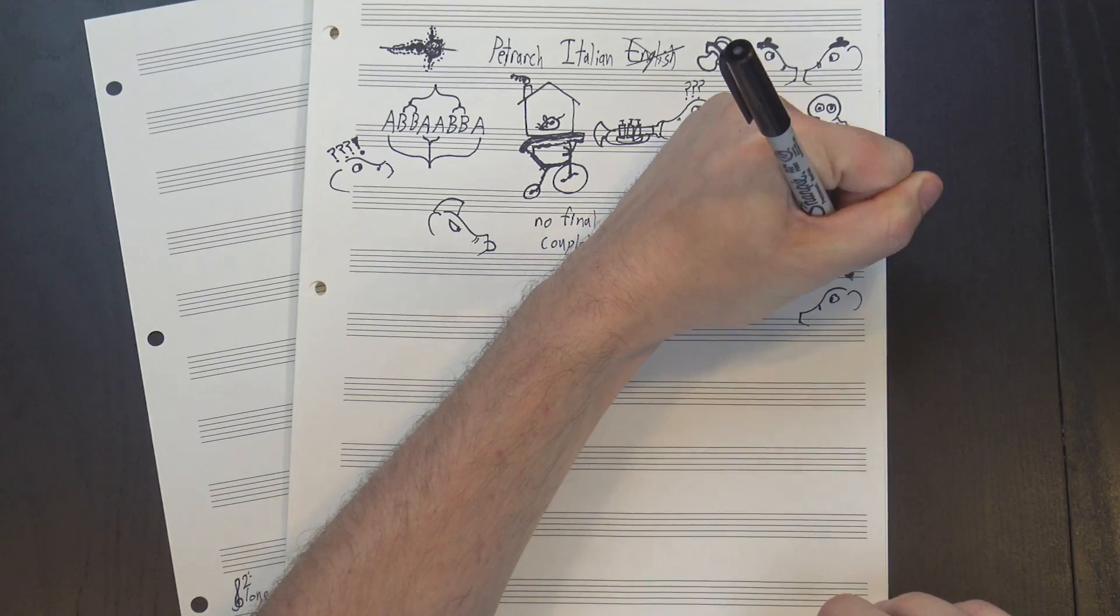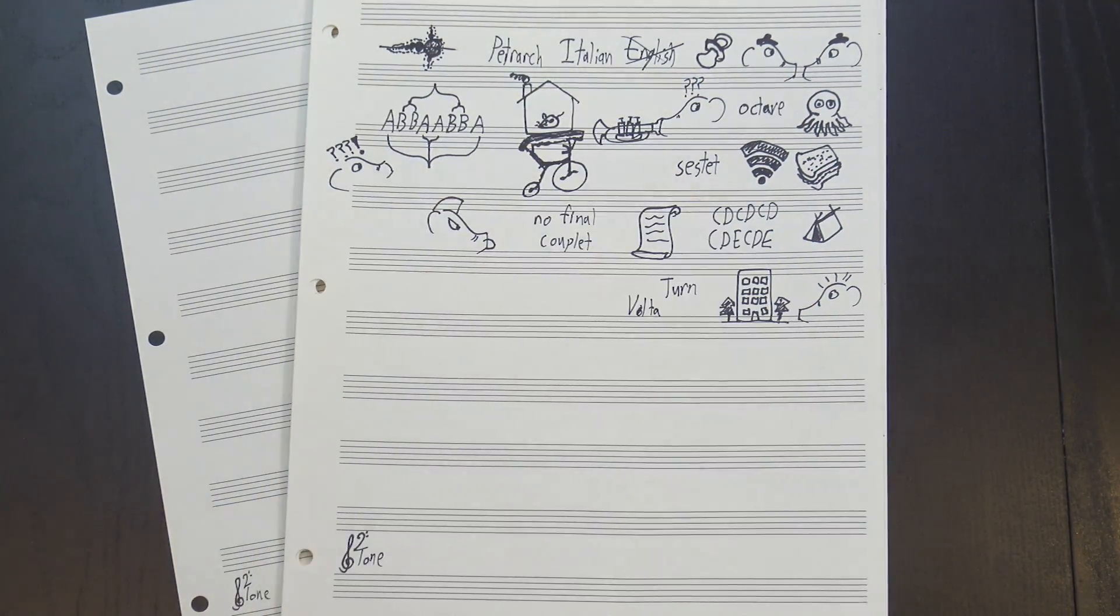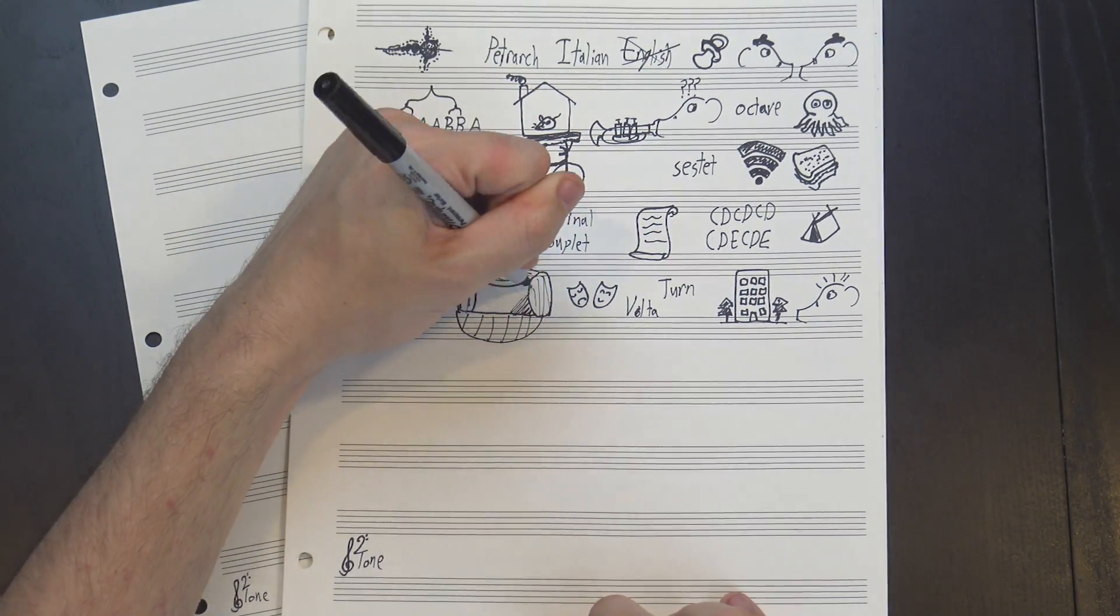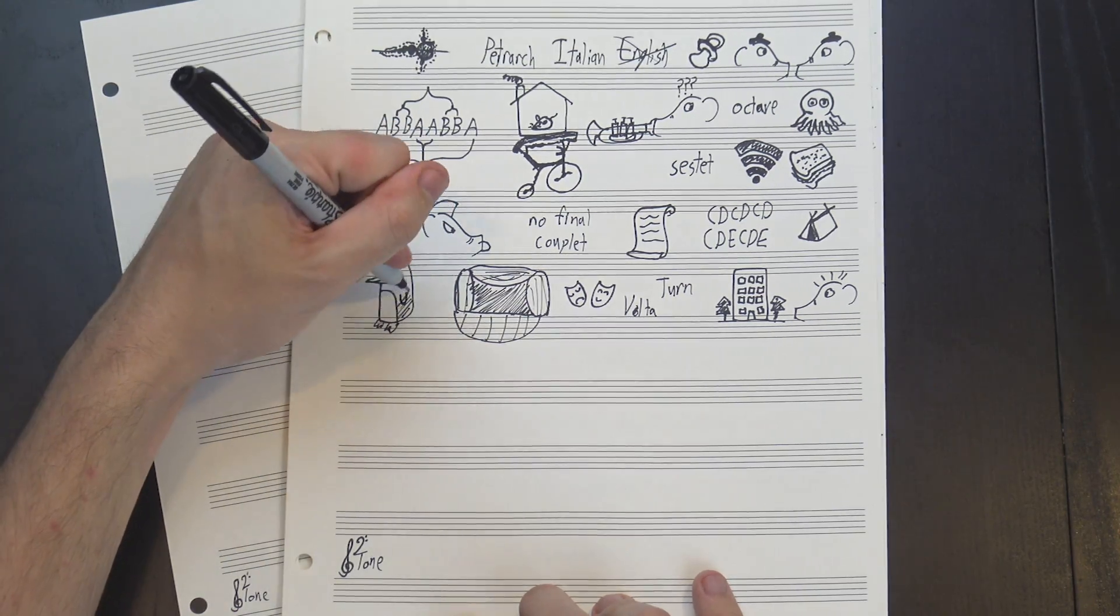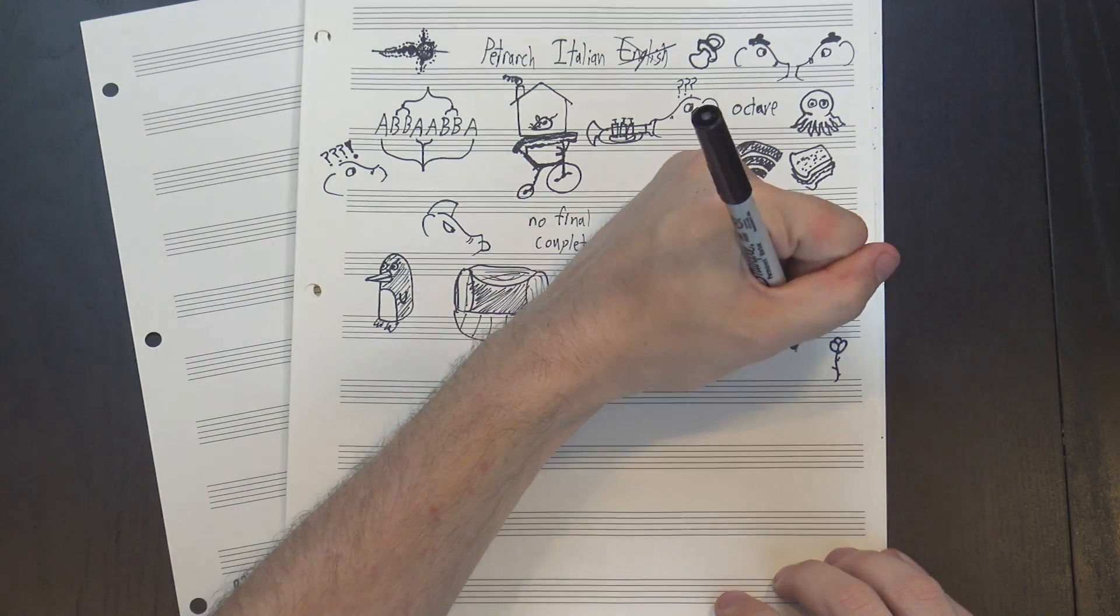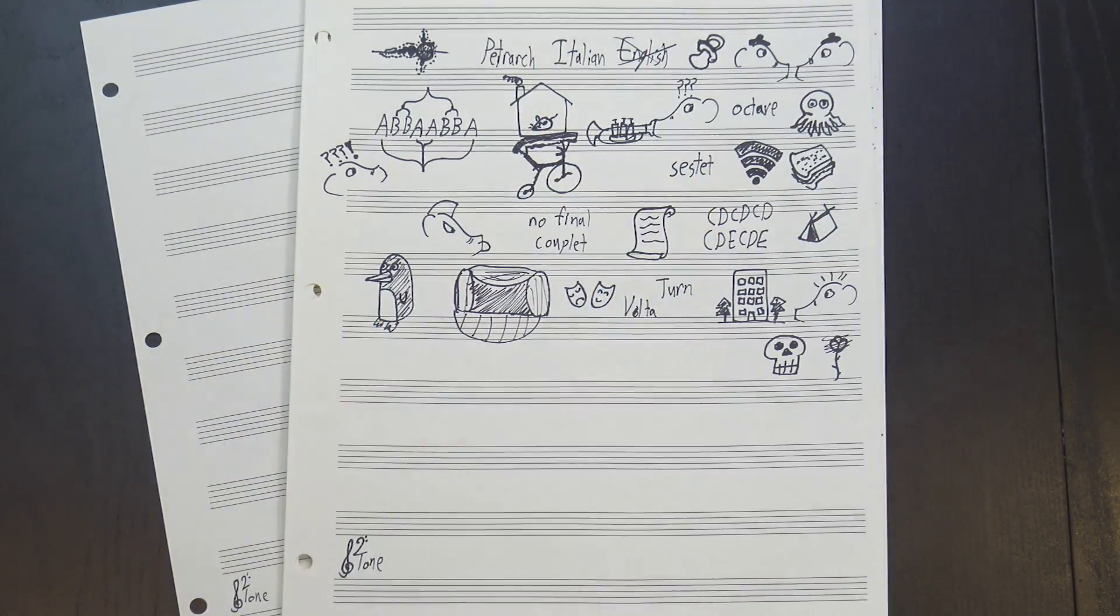This sudden change in rhyme scheme brings up an important structural element in sonnets, the turn, or volta. Sonnets are usually divided into two parts, with a sudden thematic shift marked by a change in sections. In sonnet 18, that change occurs between the second and third quatrains. The first part describes the subject as beautiful in the moment, but the line and every fair from fair sometime declines tells us that beauty is impermanent.